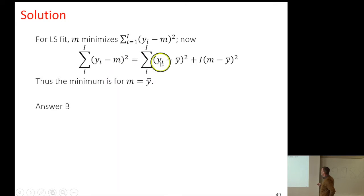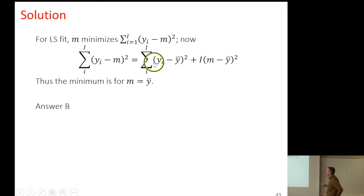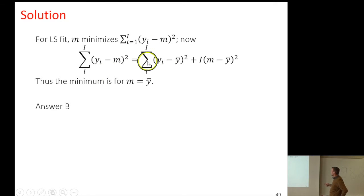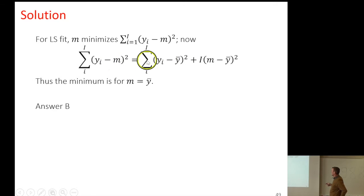If I introduce the mean — y-bar is 1 over I times the sum of the y, the sample mean — then with very little math, we see that the sum of squared errors is equal to the variance term plus I times M minus y-bar squared.